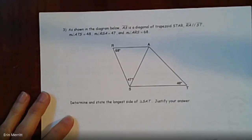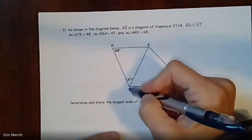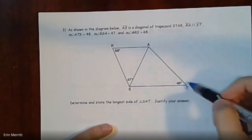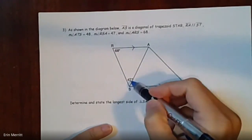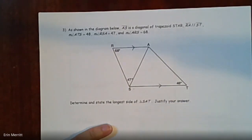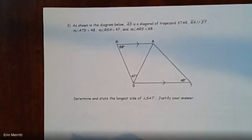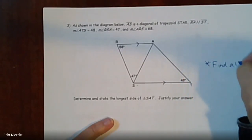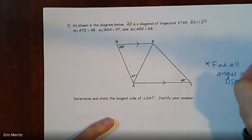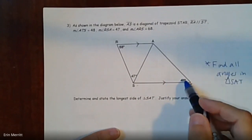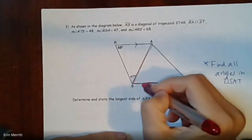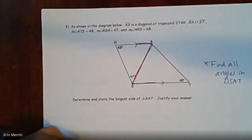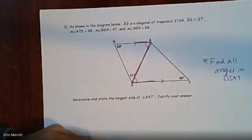The next example: in trapezoid STAR, side AS is a diagonal, and RA and ST are parallel. Angle ATS is 48 degrees, angle RSA is 47 degrees, and angle ARS is 68 degrees. We need to find all angle measures in triangle SAT. Since the lines are parallel, that diagonal creates a Z-shape, giving us alternate interior angles.